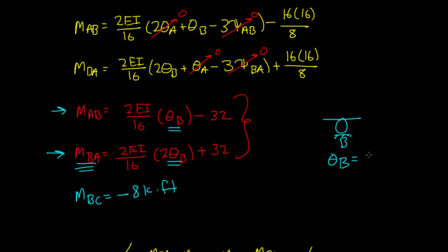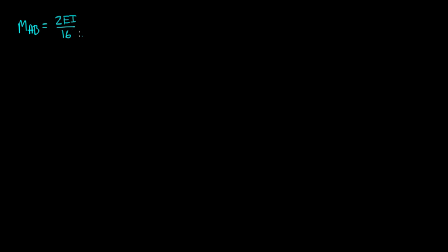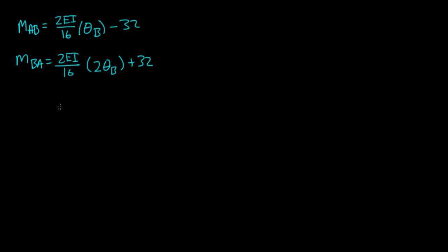Theta_B is equal to negative 64 over EI. Let me rewrite these equations: M_AB equals 2EI over 16 times theta_B, minus 32. And M_BA equals 2EI over 16 times 2*theta_B, plus 32. Now that we know theta_B is negative 64 over EI, we can plug this into both equations to figure out the moments at the ends of member AB.